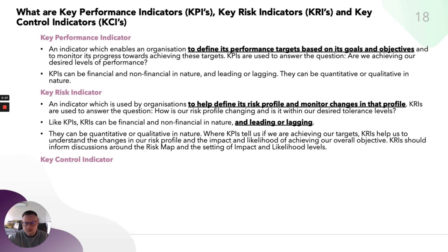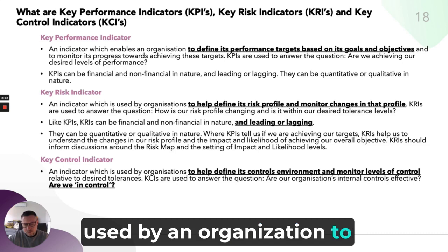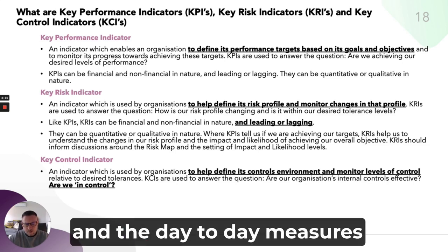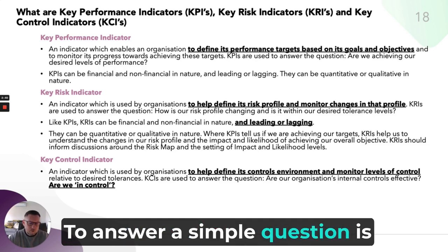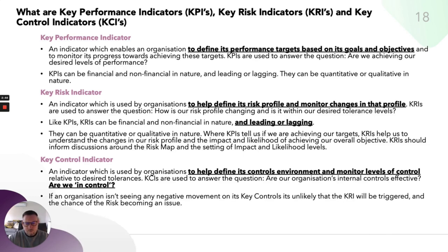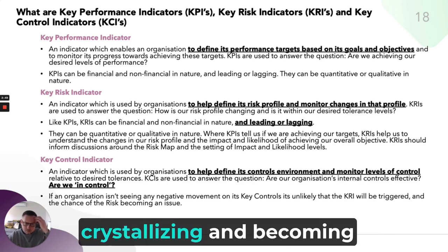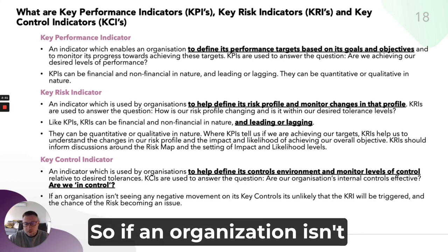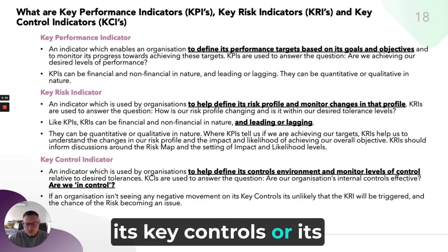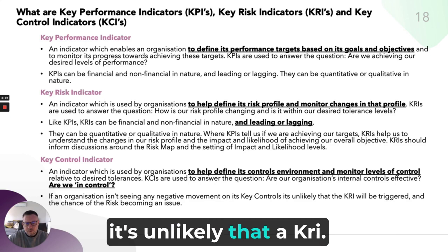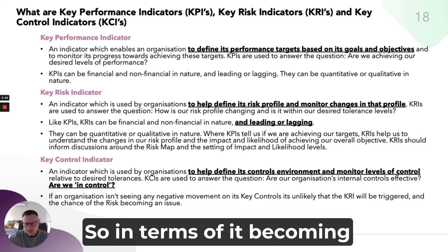Key Control Indicator. This is an indicator used by an organisation to define its control environment and the day-to-day measures it looks at, to answer the simple question: are we in control? Or in short, what's the chance of the risks we've identified crystallising and becoming an issue? If an organisation isn't seeing any negative movement on its key controls or control environment, it's unlikely that a KRI will be triggered or a risk event will occur.